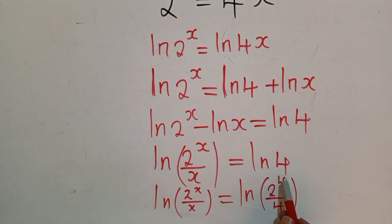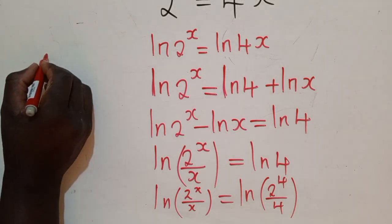So we know that 2^4 is 16. When you divide by 4, you get 4. So this is what I've gotten. Now, what I've gotten here, I'll play with it again.